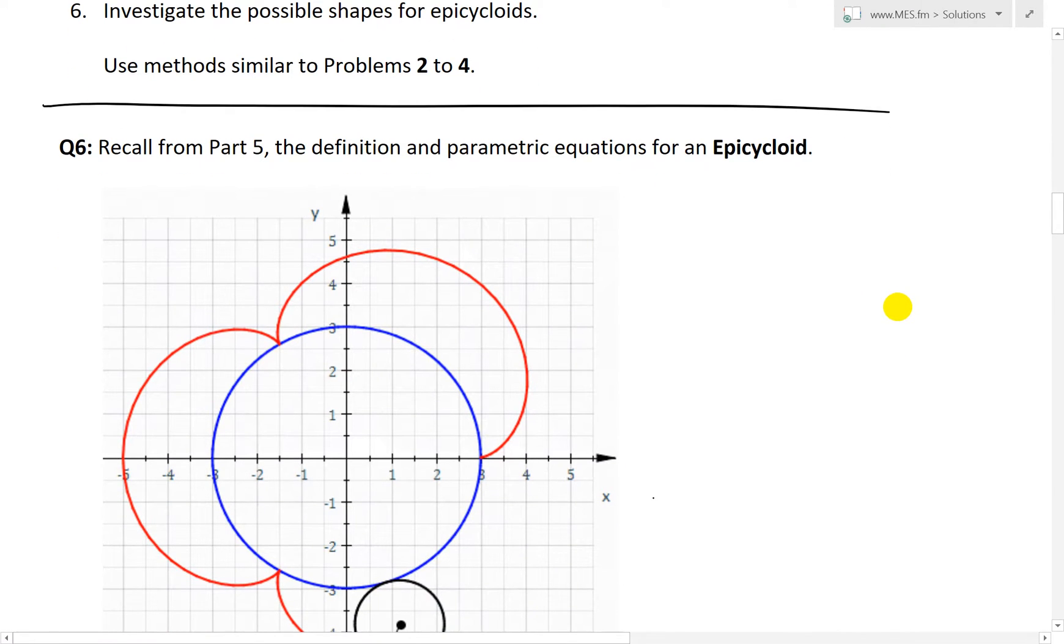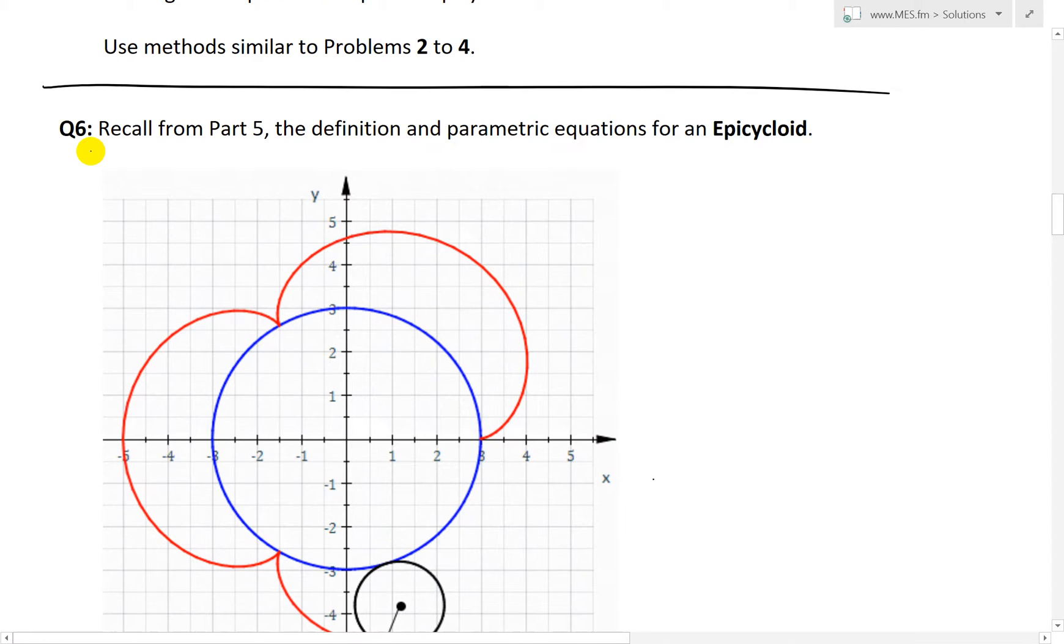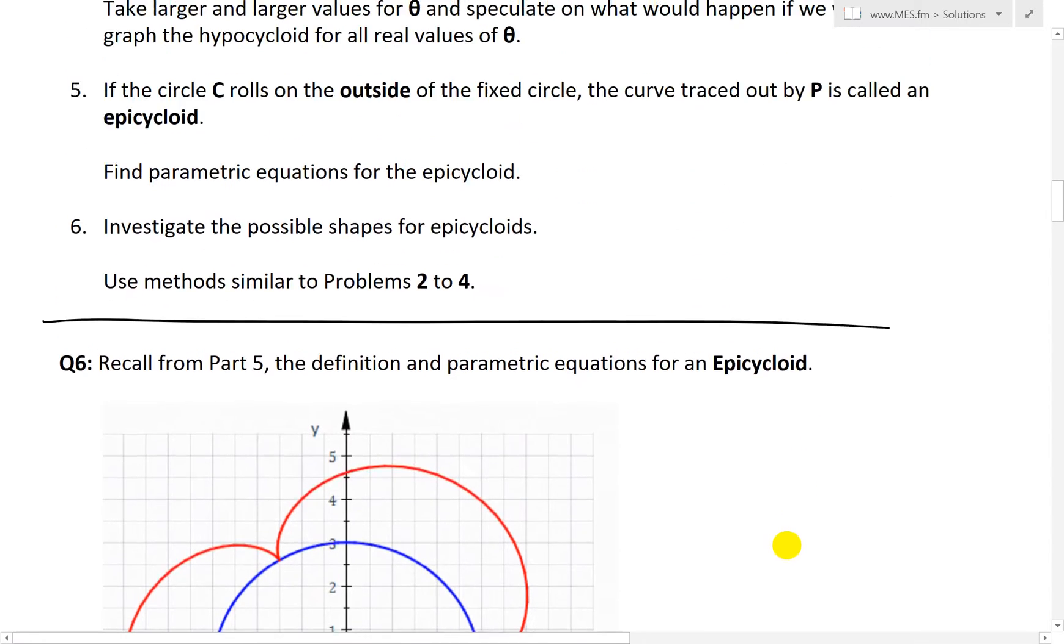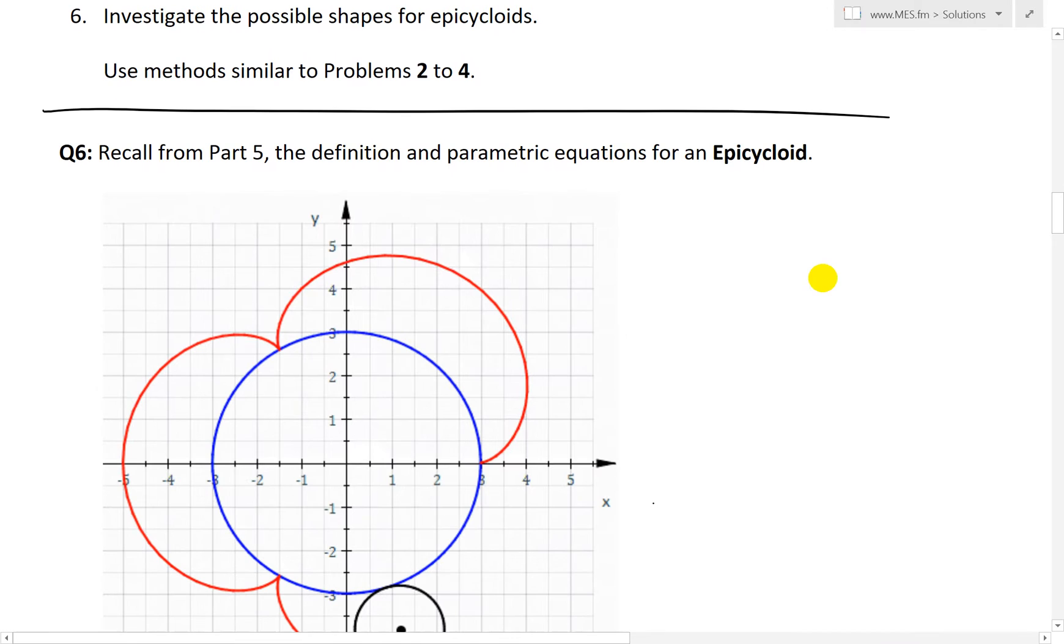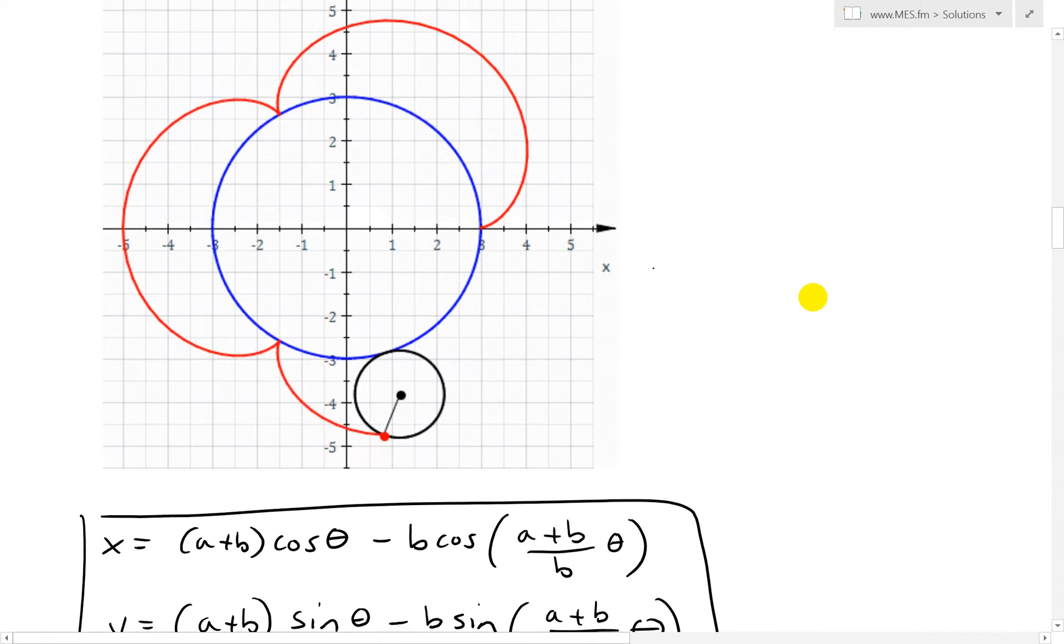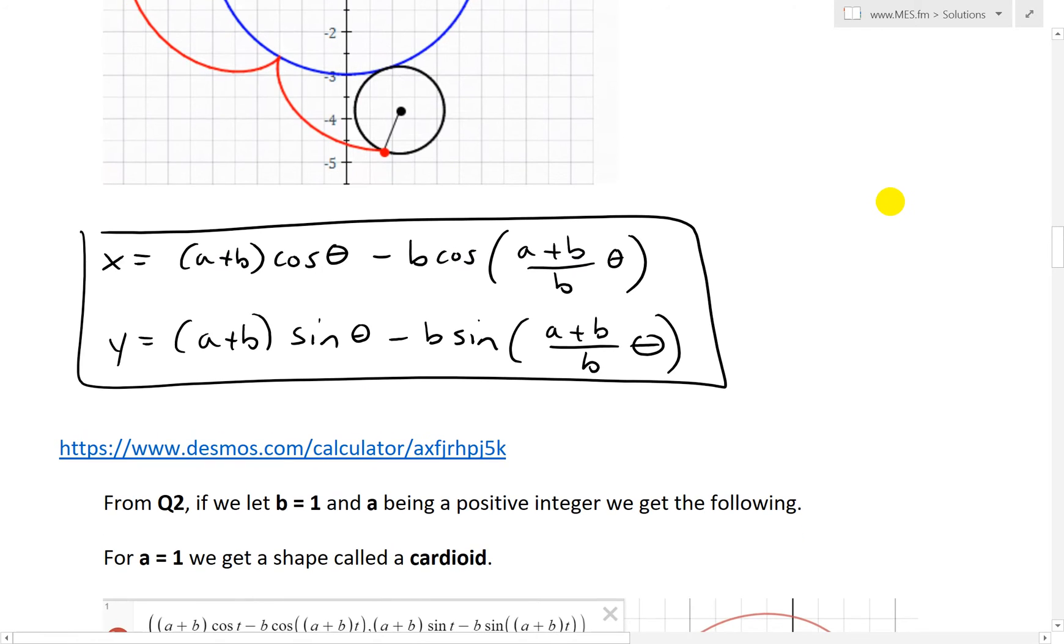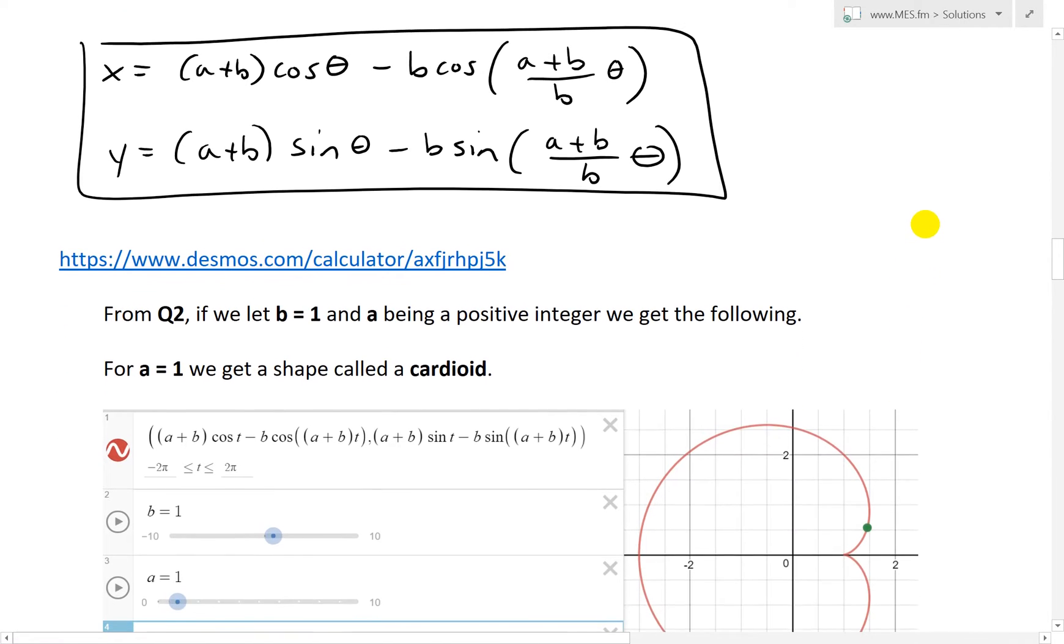And now here I've basically developed just a solution here, so question 6 or Q6, recall from part 5 the definition and parametric equations for an epicycloid. So basically an epicycloid is similar to the hypocycloid except now you rotate around the outside of the circle. So as you can see here, the point is being traced on this as it's rotating around and you get a shape that looks like that around this fixed blue circle. And these were the parametric equations which I derived in my last video.